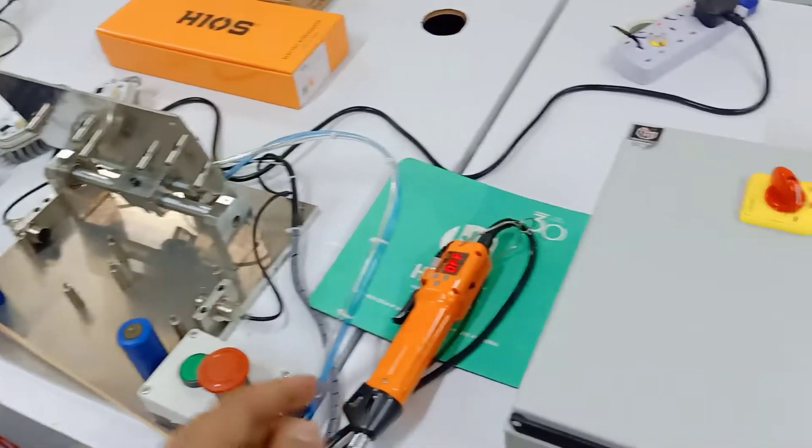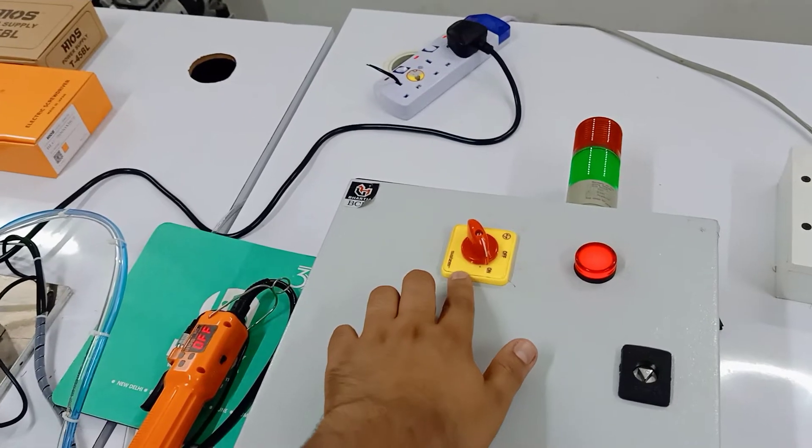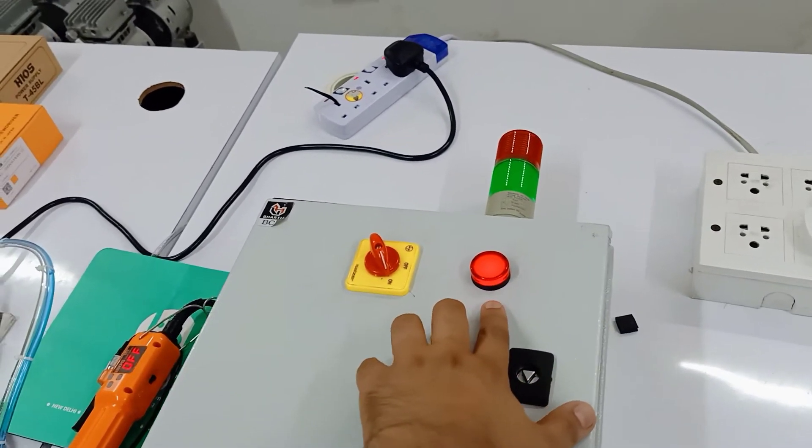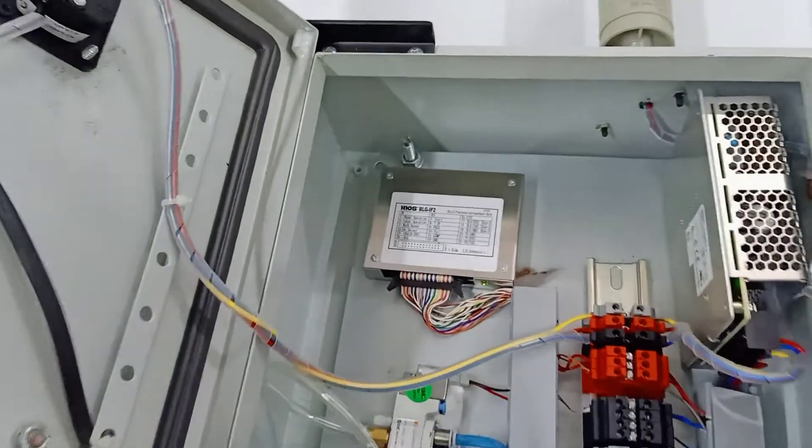Emergency switch, screwdriver, and the panel box. The panel box has an on-off button with a power indicator, a tower lamp with buzzer. This is the IF2.